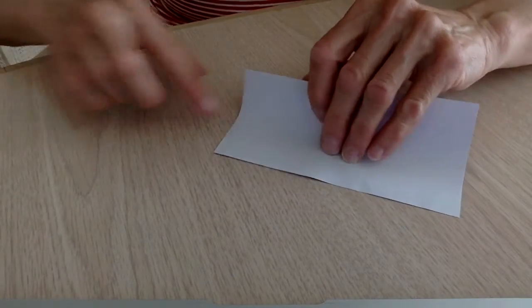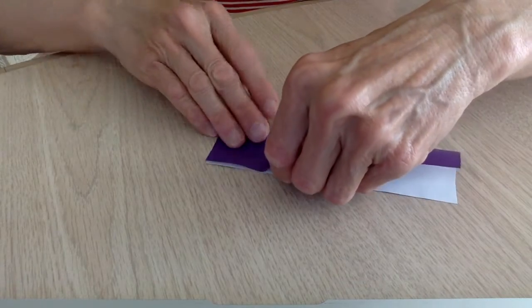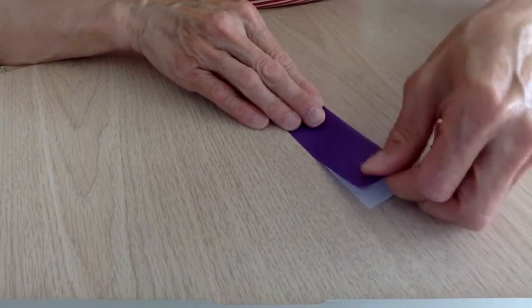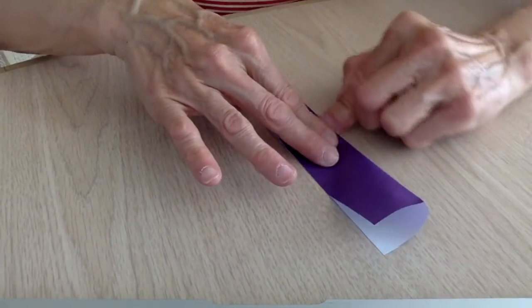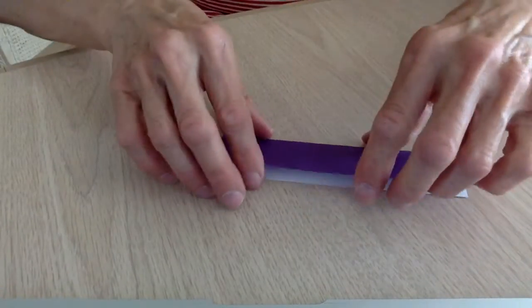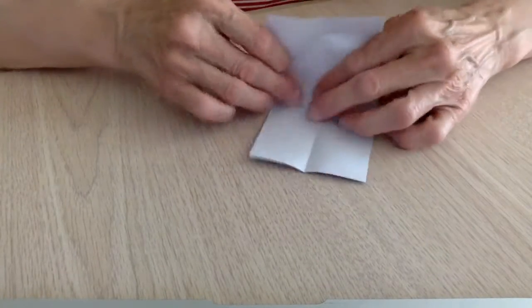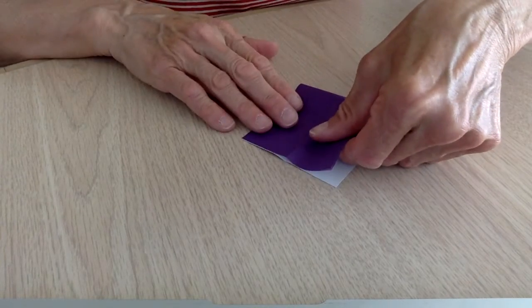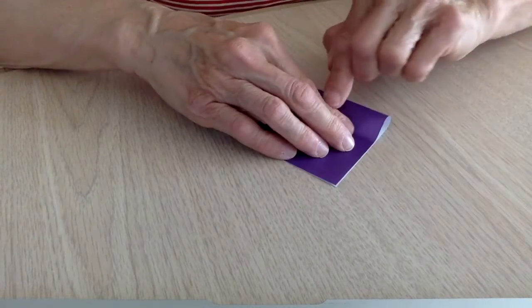The first step is to make a lengthwise fold like this. Crease. After you crease, open. Then fold this way and make a crease.